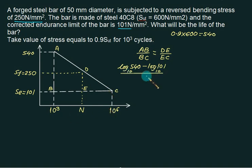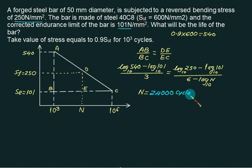On the right side, DE is log of 250 to the base 10, divided by log of 10⁶ to the base 10, which is 6 minus log of N to the base 10. In one step you can solve this and your answer should come very close to 24,000 cycles.